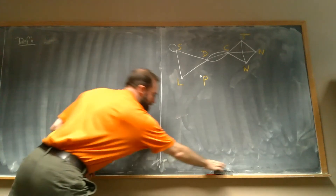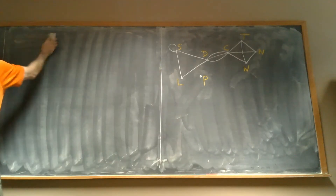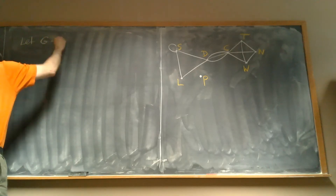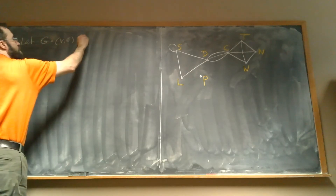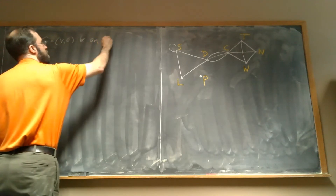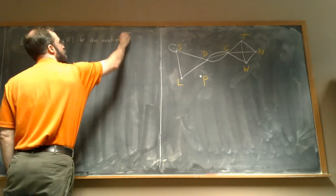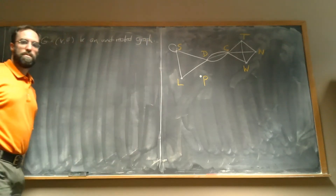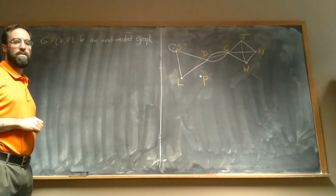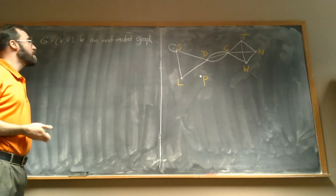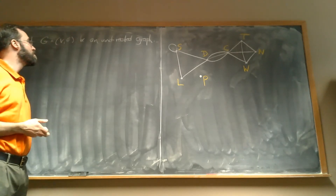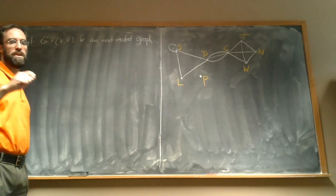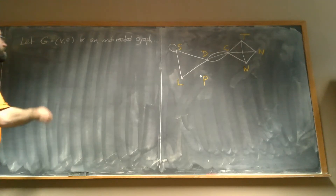For the rest of this video, we're going to let G=(V,E) be an undirected graph. So if I just start talking about V and E, I'm just talking about the vertex or edge set of some arbitrary undirected graph. I'm not going to repeat 'let G be a graph' for every single definition.